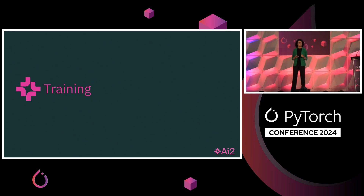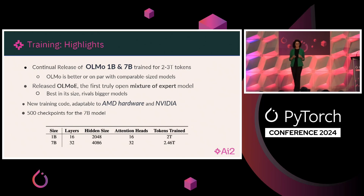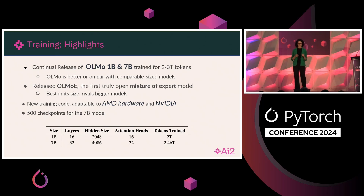Next step is training, which is the most compute-intensive stage, where the goal is to take the data and map it to model weights. We have continually released our OLMo model at 1 billion and 7 billion parameter sizes. We have done training at 2 trillion tokens and now up to 5 trillion tokens. We have also released a mixture of experts architecture and the fully open mixture of experts model called OLMo-E, which in all cases is closing the gap to other models, or in the OLMo-E setting even rivals bigger models. The code is adaptable to both NVIDIA and AMD hardware, and we have released many checkpoints so people can understand how training progresses over time.